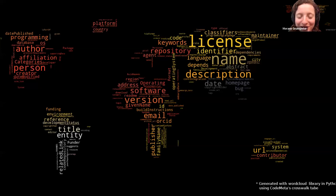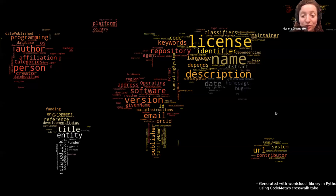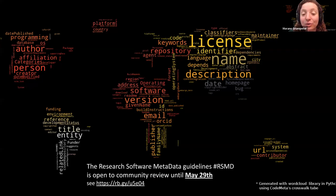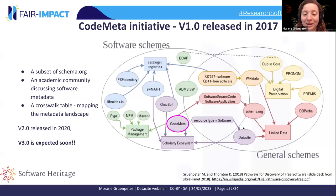Metadata is very important because the extrinsic identifier identifies the metadata record. Researchers should provide metadata in the code itself and on the registry or scholarly repository so that the software can be understood and found. The FAIR Impact project is working on research software metadata guidelines (RSMD), which are open for community review until May 29th. This will pave the way to make software metadata normative.